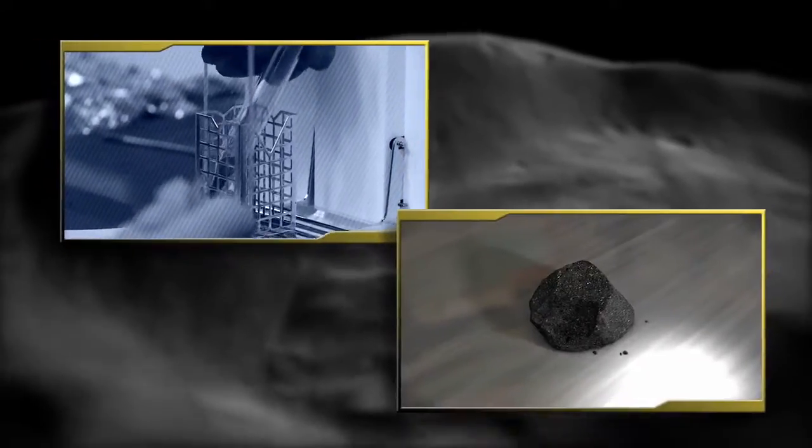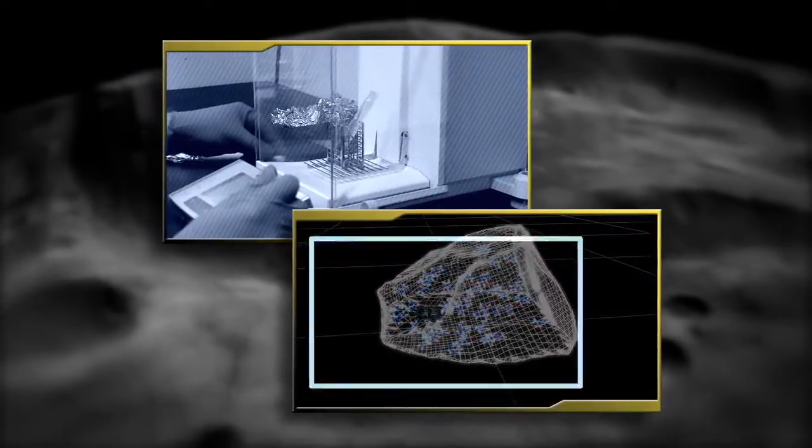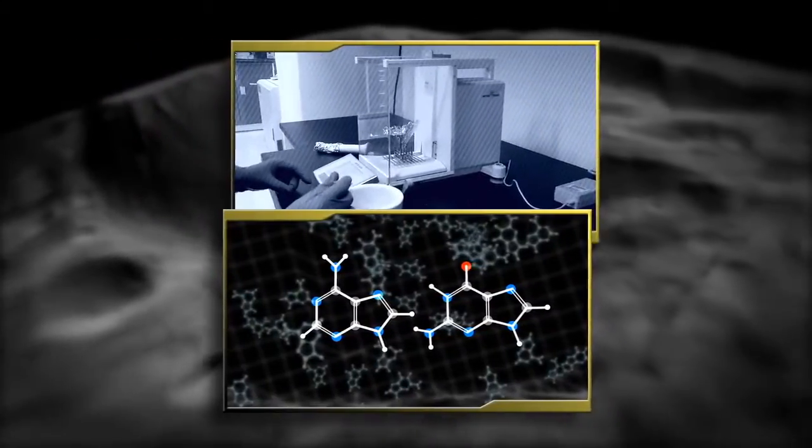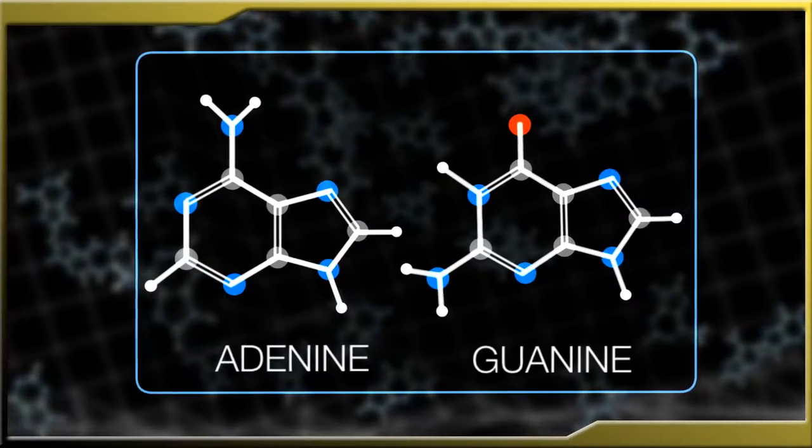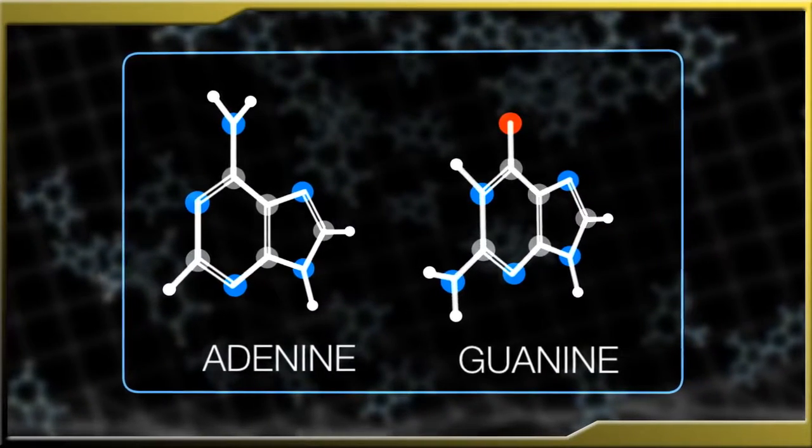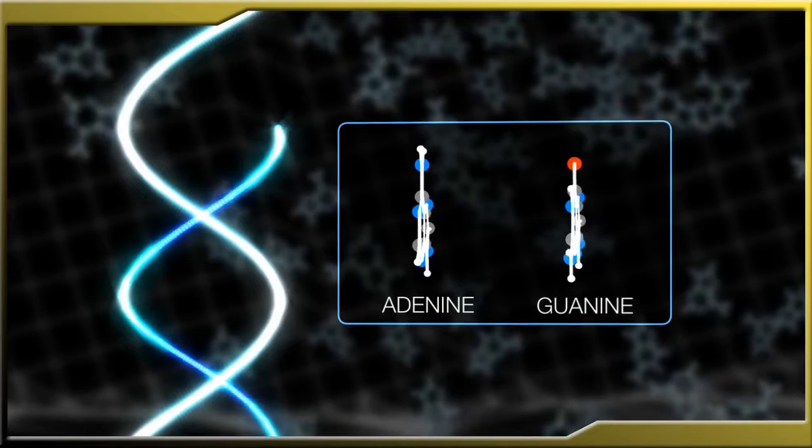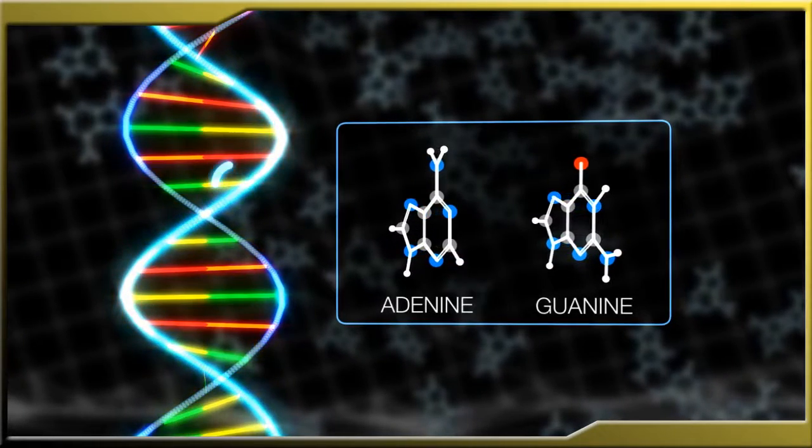Since Bennu may be rich in organic material or water left over from the formation of the solar system, sampling it could reveal whether the building blocks of life were present at that time, perhaps providing clues to the origins of life itself.